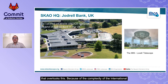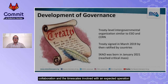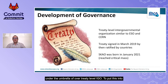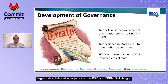Because of the complexity of the international collaboration and the timescales involved — with an expected operational lifetime of over 50 years — the SKA has chosen to work under the umbrella of a treaty-level IGO. This puts us in the same company as a handful of other large-scale collaborative projects such as ESO and CERN.